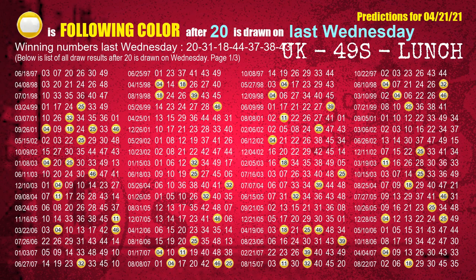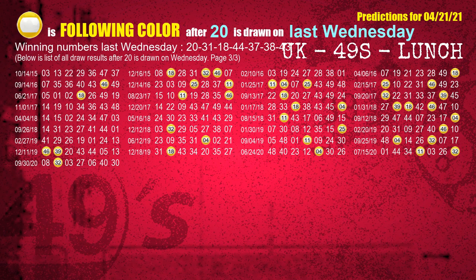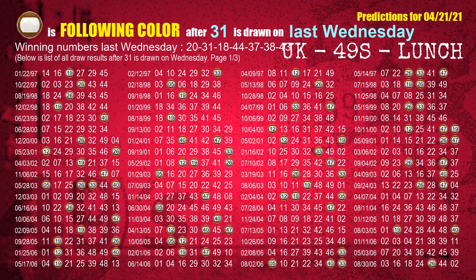The first winning number last Wednesday is 20. We list all draw results which are one week after a Wednesday draw with 20 as a winning number. The most frequently following color is yellow when 20 is the winning number on last Wednesday — we highlight the color yellow with a color ball image for you. The second winning number last Wednesday is 31. The most frequently following color is brown when 31 is the winning number on last Wednesday.